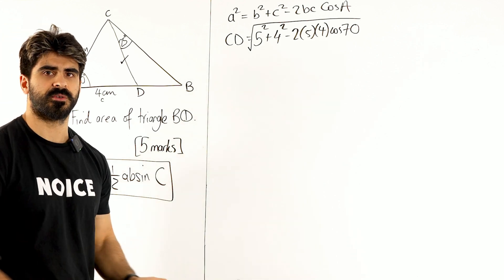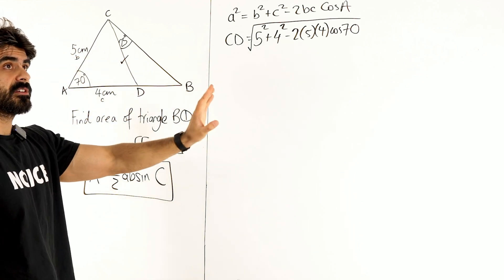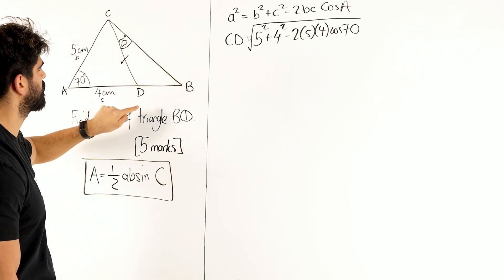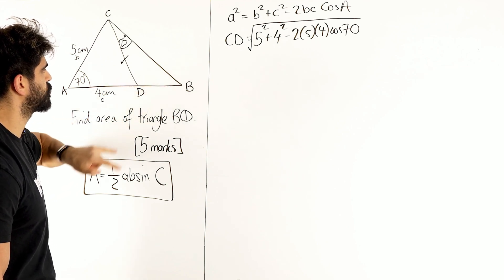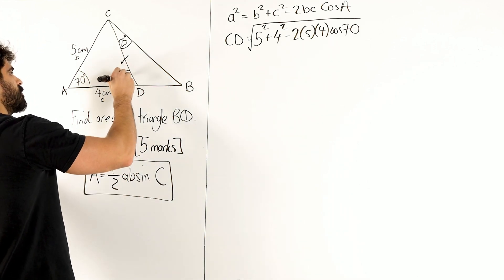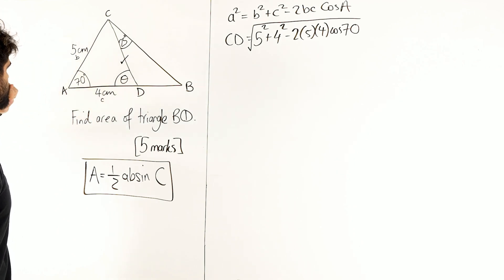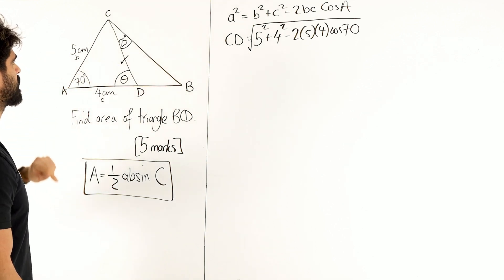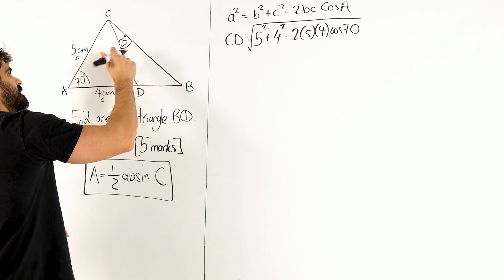So it looks like I'm going to have to work out another angle. The only thing shared between these two triangles is this length, and these two angles here must add up to 180°. Can I work out this angle here — let's call it theta? Well, theta is opposite 5, and we have 70° in this triangle, and we've just worked out CD. So we can do the sine rule here.